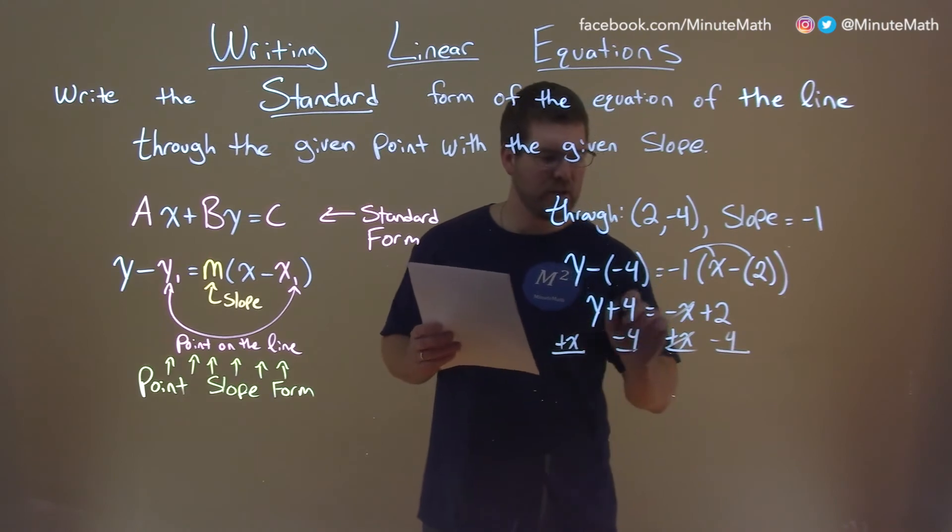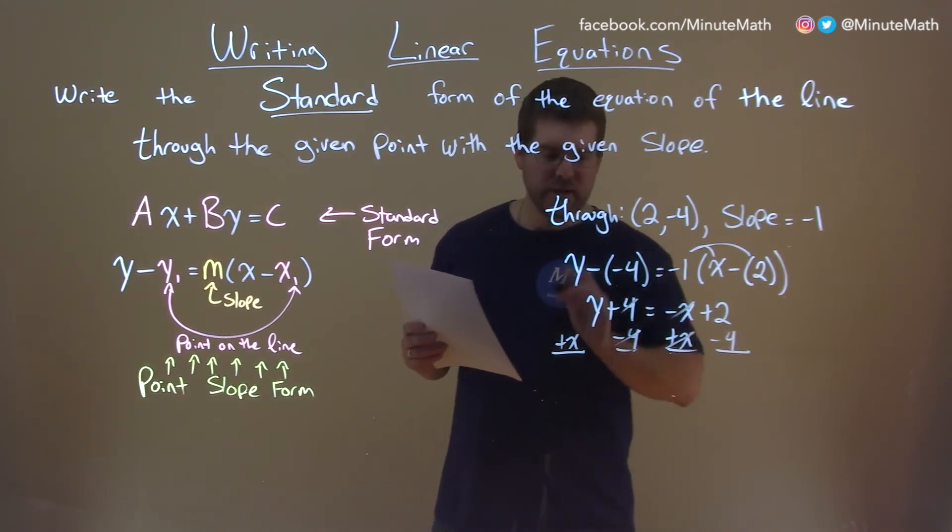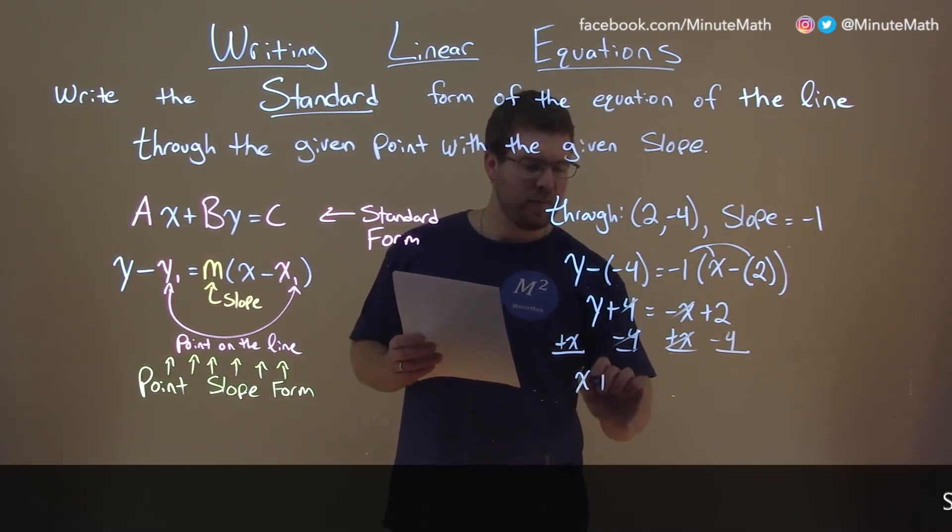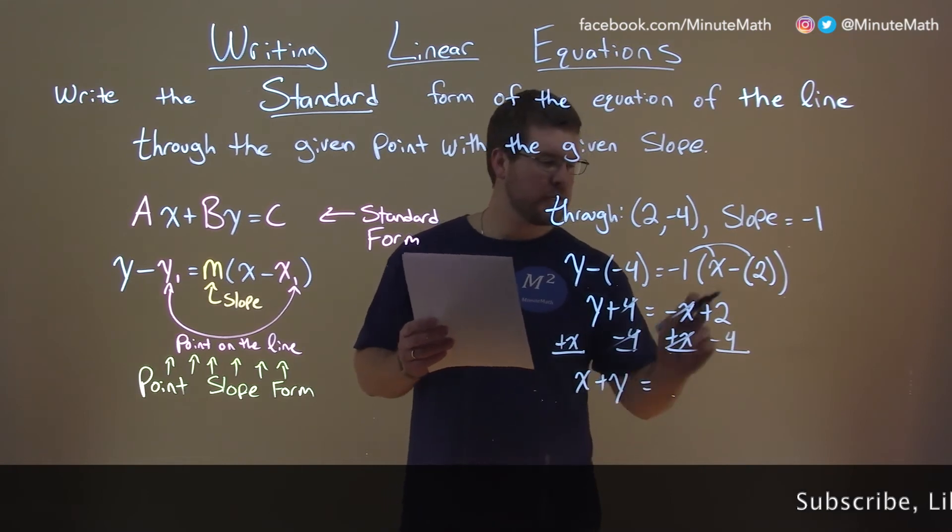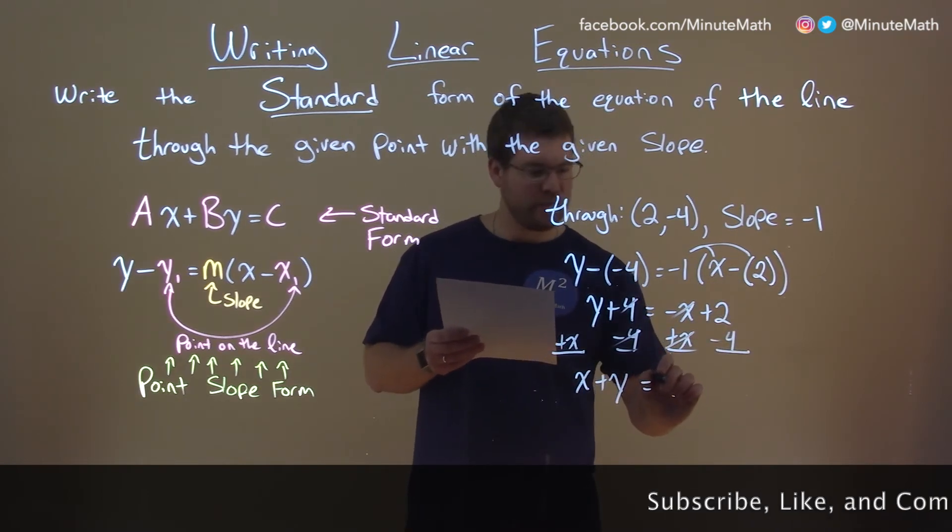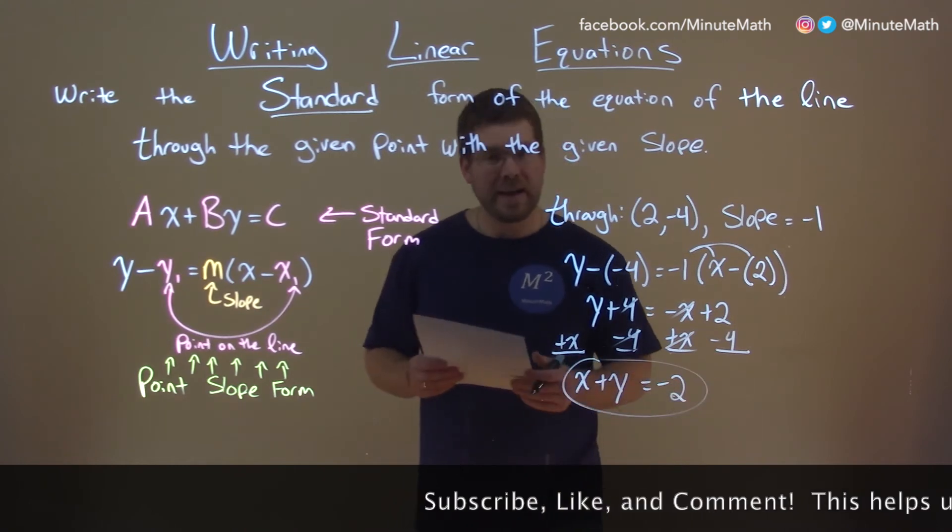x's cancel here, 4's cancel here, and we're left with x plus y equals 2 minus 4, which is a negative 2. And there we have our answer.